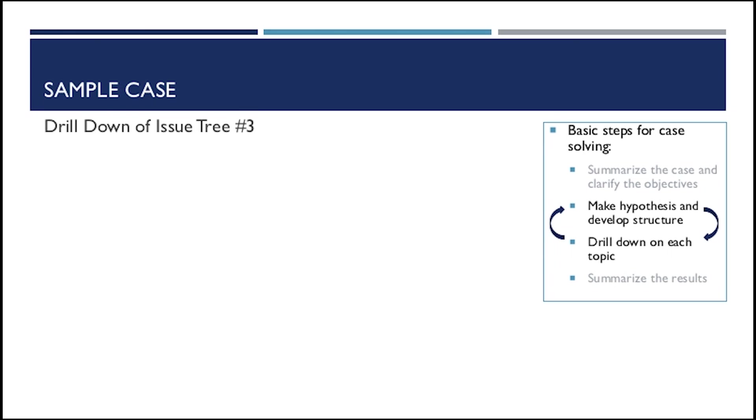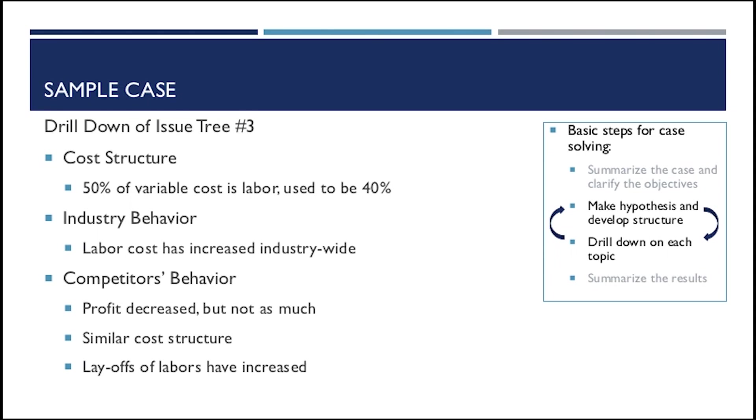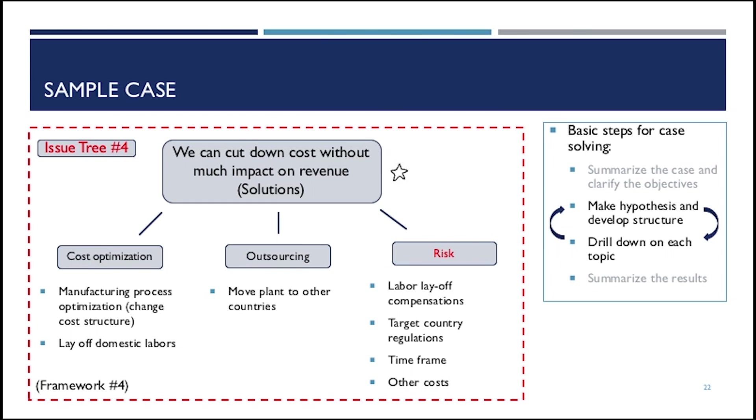So now we drill down the issue tree that you just saw. And we see that cost structure increased from 40% to 50% this year. And the industry behavior, the labor cost has increased industry-wide. So it's not a company-specific problem. And then our competitor's behavior, their profit also decreased, but not as much as us. And their cost structure is similar to ours. And what they did, they laid off a lot of labor. And if you probe a little bit more on the industry-wide labor cost increase, you see that it is because of the increase of the minimum wage that caused this problem. So that's the root cost that we're looking for.